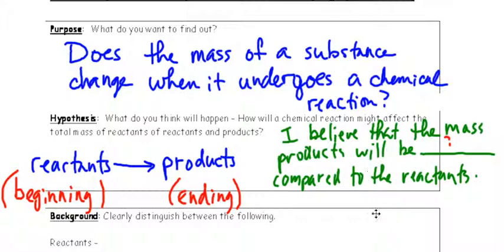So, your hypothesis is just going to simply be, I believe that the mass of the products will be either less than, greater than, or equal to, compared to the reactants. So, the same, or less, or more, really would go in that question mark area.